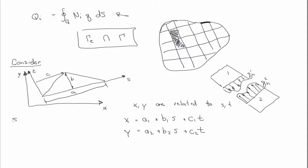So X and Y are related to S and T through these equations. And we can solve the problems. And we can solve for the unknowns, A1, B1, C1, A2, B2, C2, by evaluating the triangle at the nodal locations. So if we call this node 1, node 2, node 3, we'd have X1, Y1, X2, Y2, X3, Y3. And those correspond in S and T coordinates. So at S equals zero, T equals zero, we have that X equals X1, and Y equals Y1.